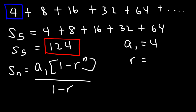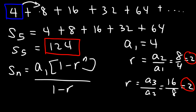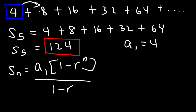So r is the common ratio. 4 times what will give you 8? 4 times 2 is 8. 8 times 2 is 16. 16 times 2 is 32. So r, the common ratio, is the number that if you multiply the first term by, you get the second term. To find r, you can take the second term divided by the first: 8 over 4 is 2. Or take the third term divided by the second: 16 over 8 is also 2. If these two numbers are different, then it's not a geometric series — they have to be the same. So we can see that the common ratio is 2.